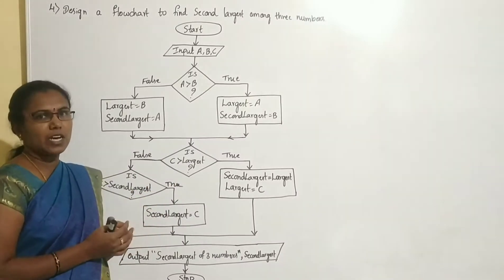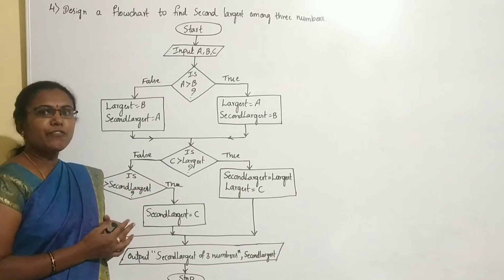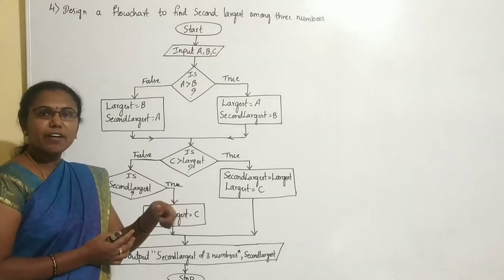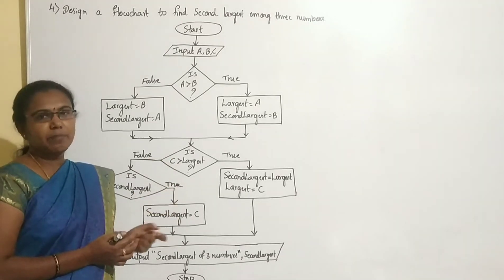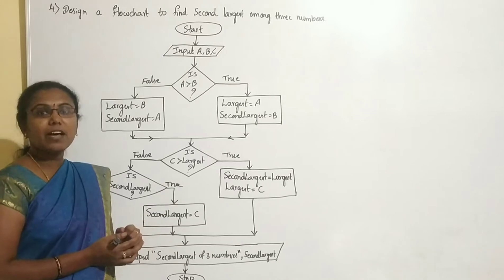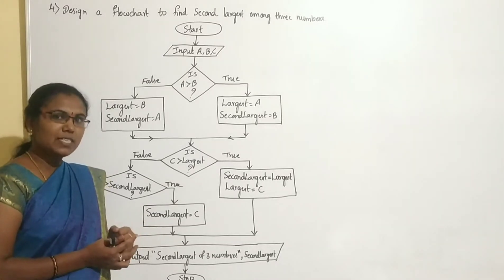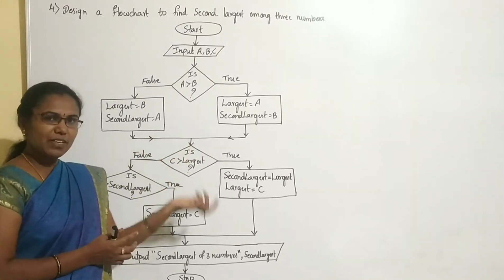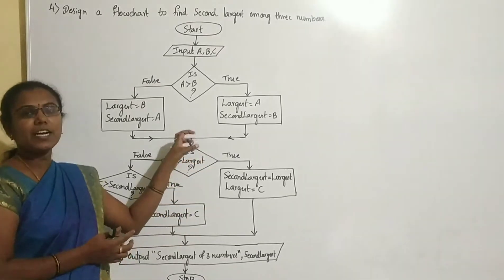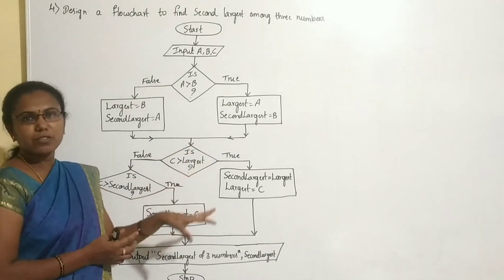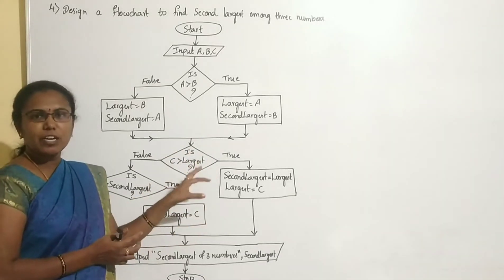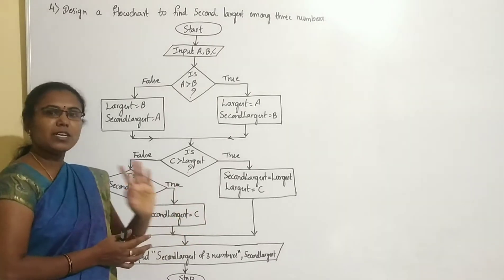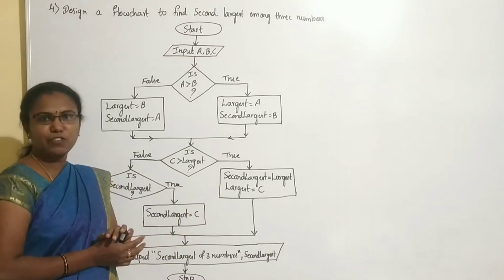Next is flowchart. Flowchart means the pictorial or graphical representation of an algorithm. The algorithm's step-by-step procedure is represented using symbolic notation — that is called a flowchart.